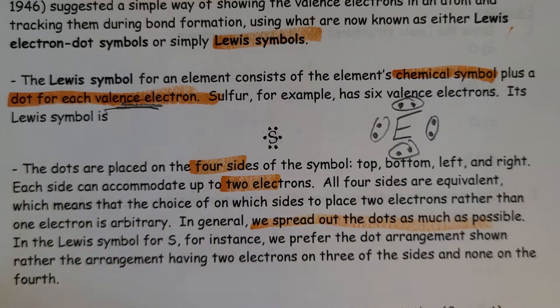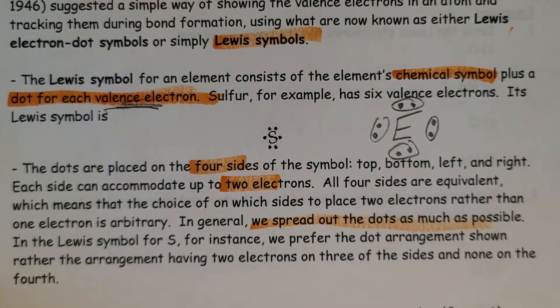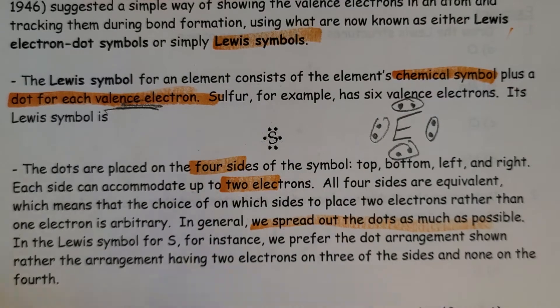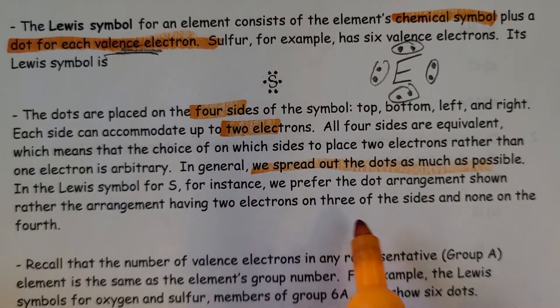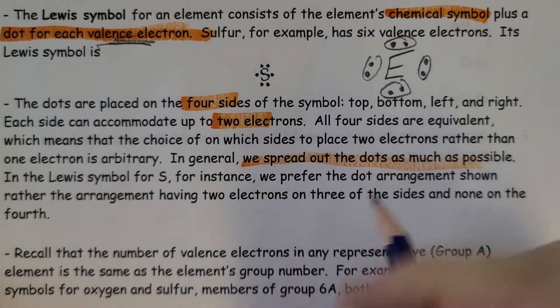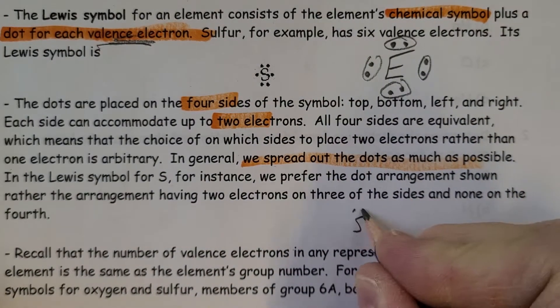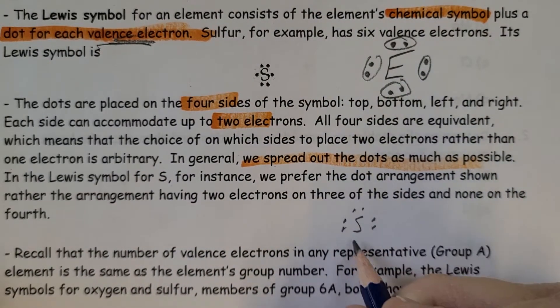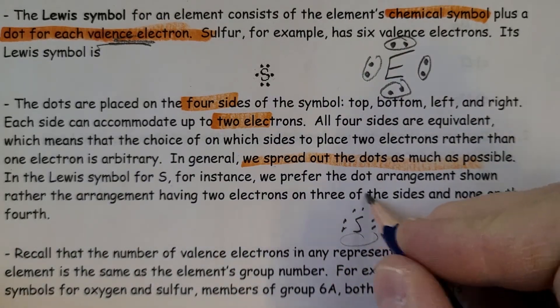That's why the sulfur one looks like that. In the Lewis symbol for S, for instance, we prefer the dot arrangement as shown up there as opposed to doing it like this, in which we have an empty area. It's usually not drawn like that.